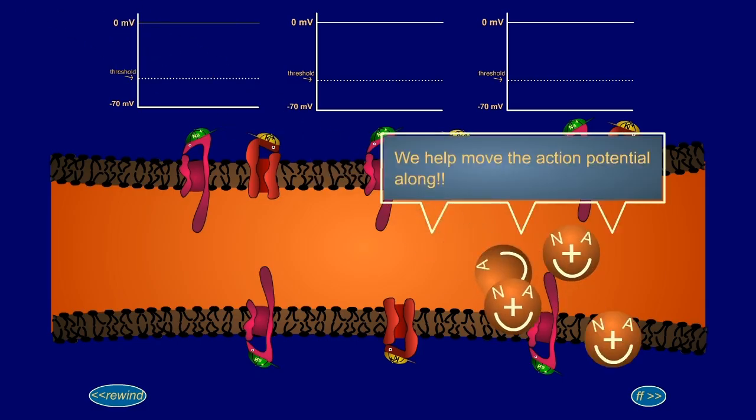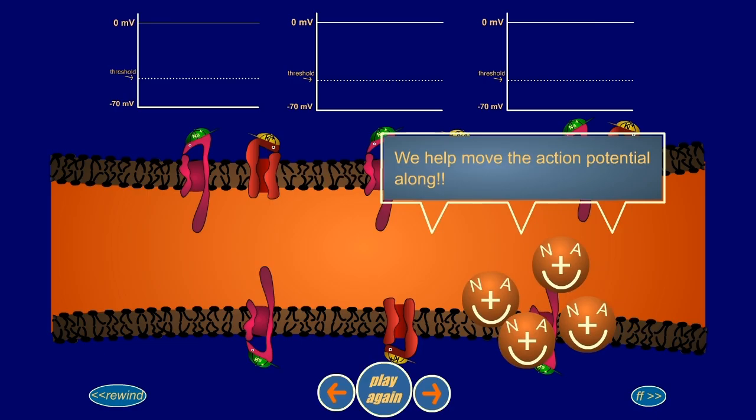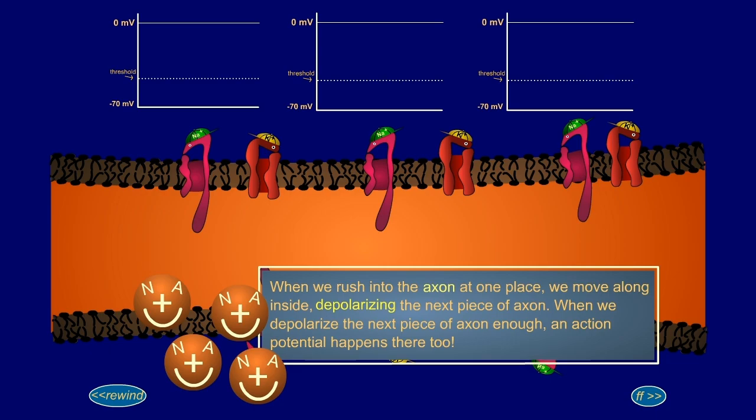We help move the action potential along. When we rush into the axon at one place, we move along inside, depolarizing the next piece of axon. When we depolarize the next piece of axon enough, an action potential happens there, too.